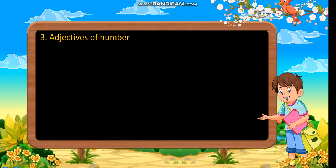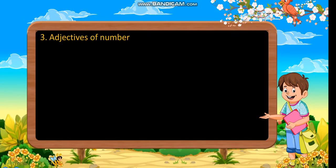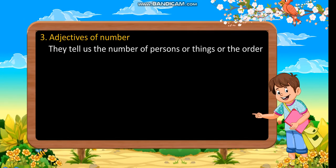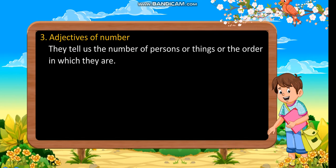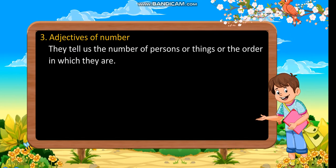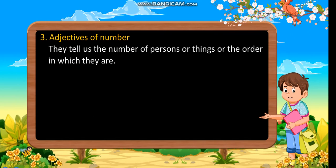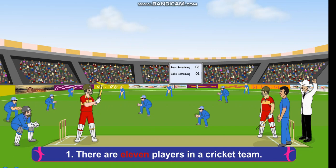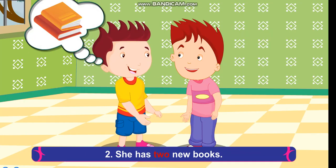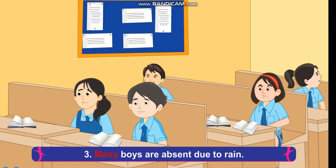Adjectives of number: they tell us the number of persons or things or the order in which they are. Examples: There are 11 players in a cricket team. She has two new books. Many boys are absent due to rain.